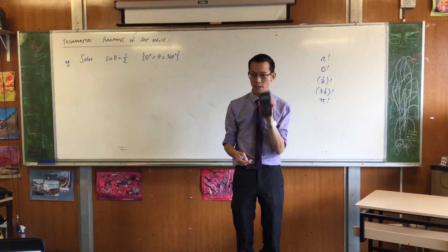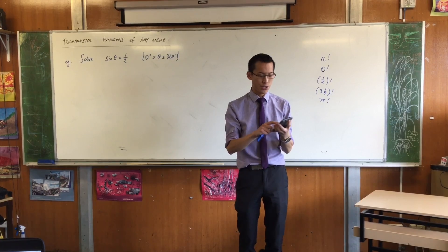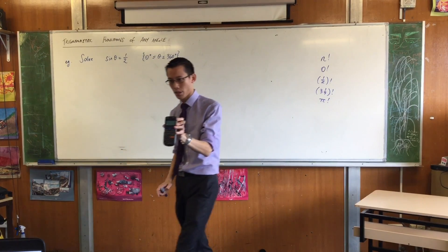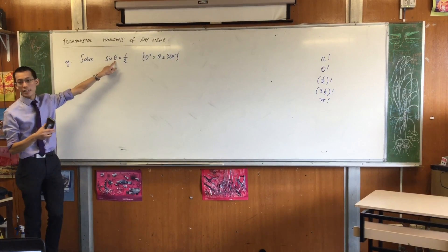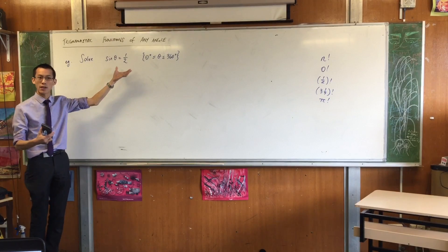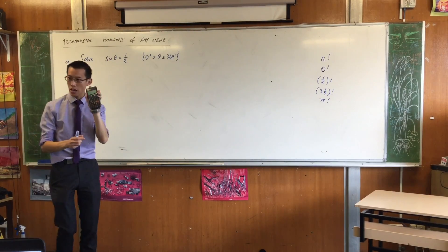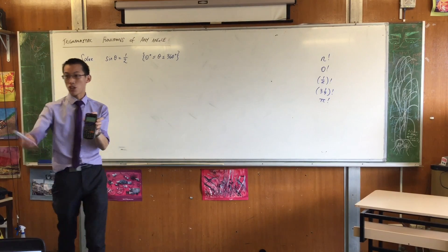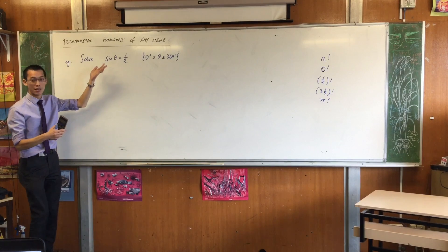Sine theta equals a half. Make sure your calculator is in degrees mode, in case you've lent it to someone else and it's not. And if you go sine of 30 degrees, it should faithfully return to you a half. What that means is, 30 degrees is a solution for theta. I can put it in, it satisfies the equation. It's not the only one though. If you go ahead and you change 30 to 150, again, you get a half. So theta equals 150 degrees is another solution.